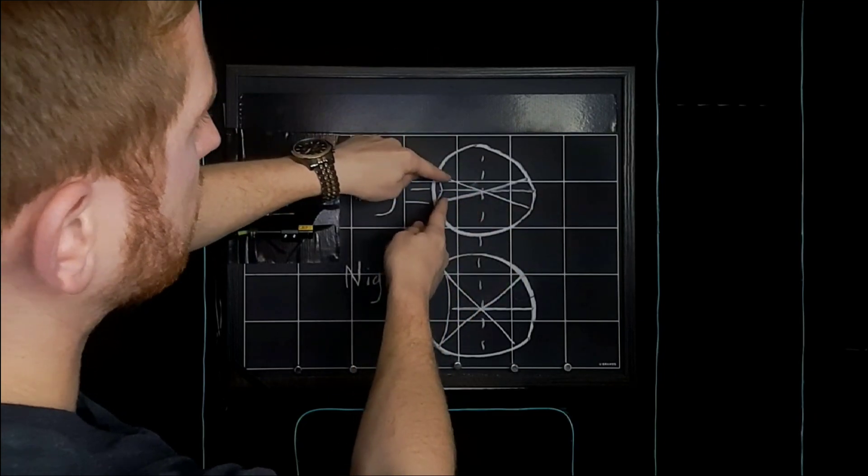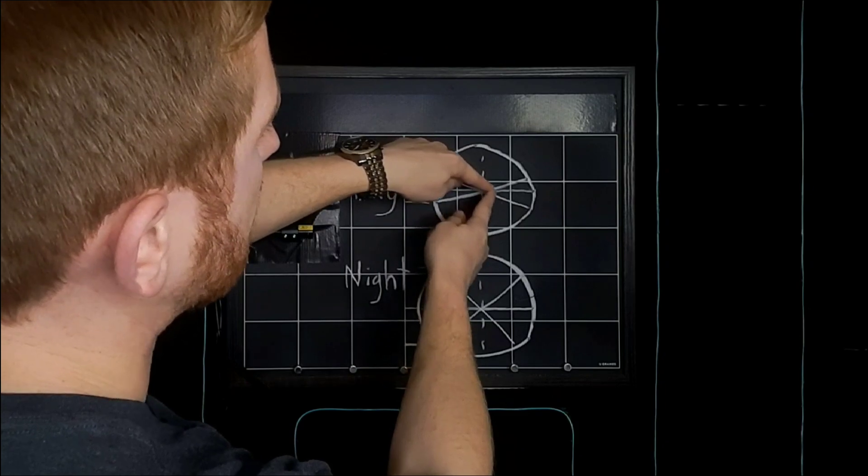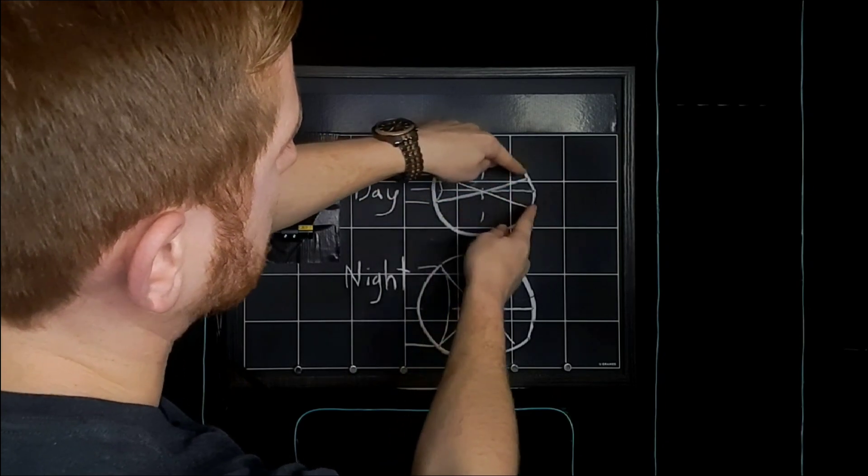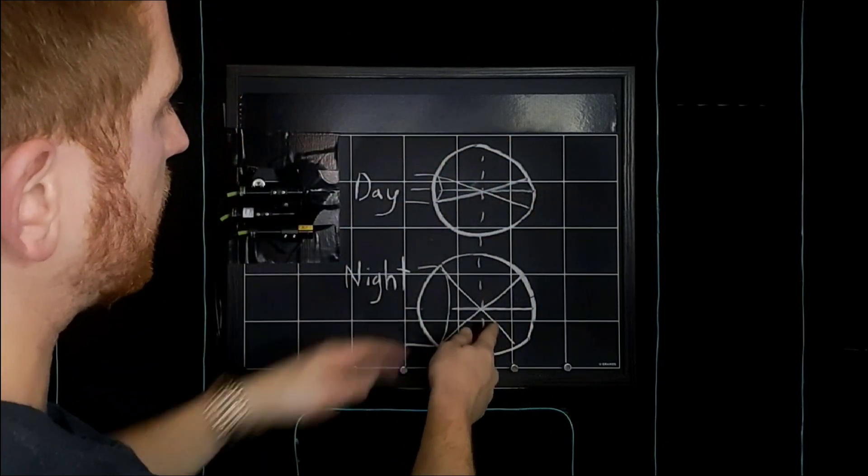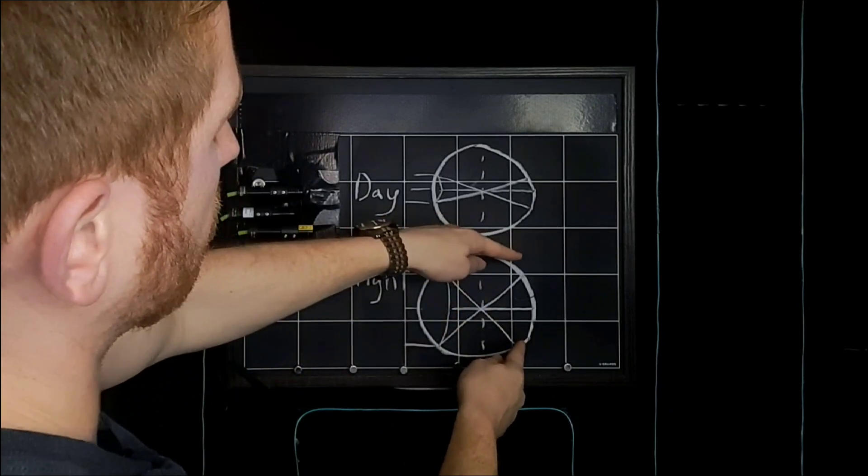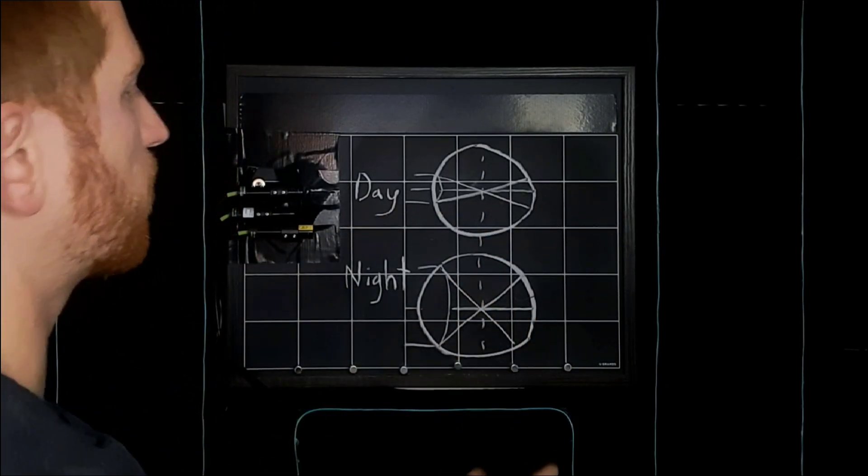So because of that more shallow angle during the day, yes, the light spreads out past the point of focus. But at night it spreads out way more because of that sharper angle.